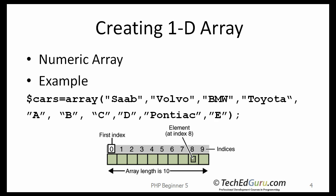Let's start with creating a one-dimensional array. In PHP, there are three kinds of arrays. You have a numeric array, meaning an array with a numeric index — that's what I will start with first, because this is very similar to arrays in other programming languages. PHP also supports associative arrays, where each ID key is associated with a value. You can also have multi-dimensional arrays, an array containing one or more arrays.